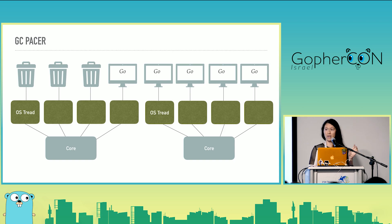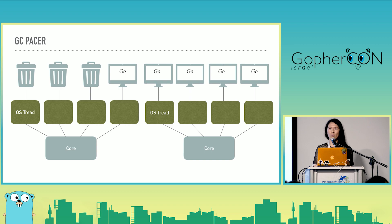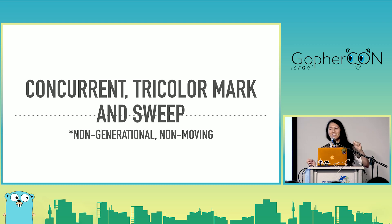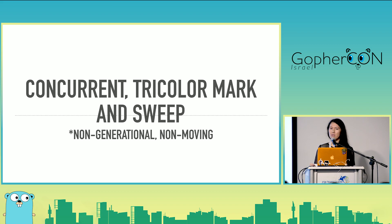Sweeping also takes time, and the pacer is responsible for stopping concurrent mode failure — we don't want to generate more garbage than we can clean up. Potentially we could be running seven threads of garbage collection and only one thread of actual program mutation. The actual algorithm is concurrent tricolor mark and sweep. It's also non-generational and non-movable. We don't have time to go into what that means in detail, but feel free to chat with me afterward.